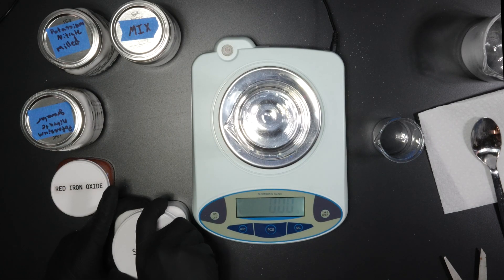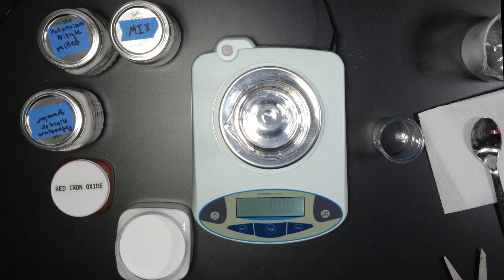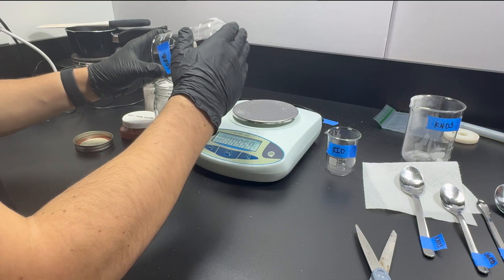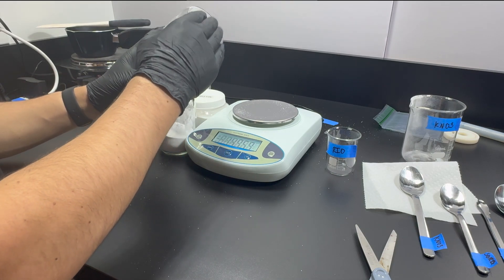Next, I measure out 52.5 grams of sorbitol. I'm tapping the jar a lot to help some of the sorbitol come out from what I'm guessing is static buildup.